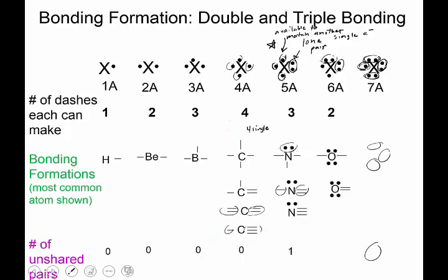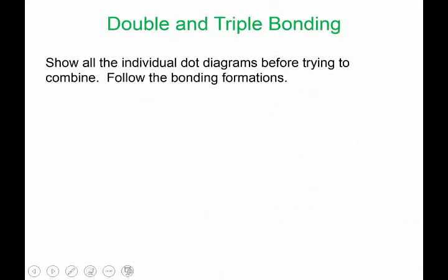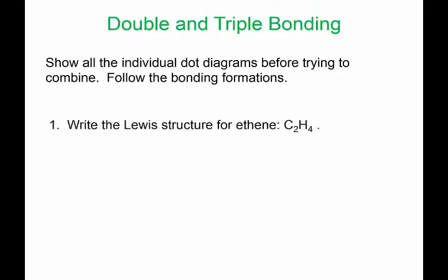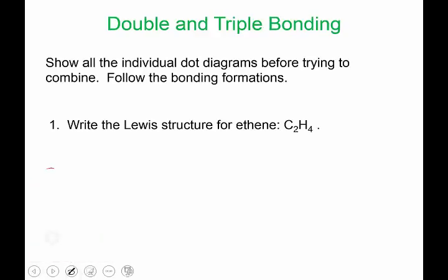Let's go look at some examples. Write the Lewis structure for ethene. In our molecule we have two carbons and four hydrogens. If we tried to put three hydrogens on one carbon, our next carbon would only have one hydrogen left over, and this carbon is only making two dashes. So something's wrong there.